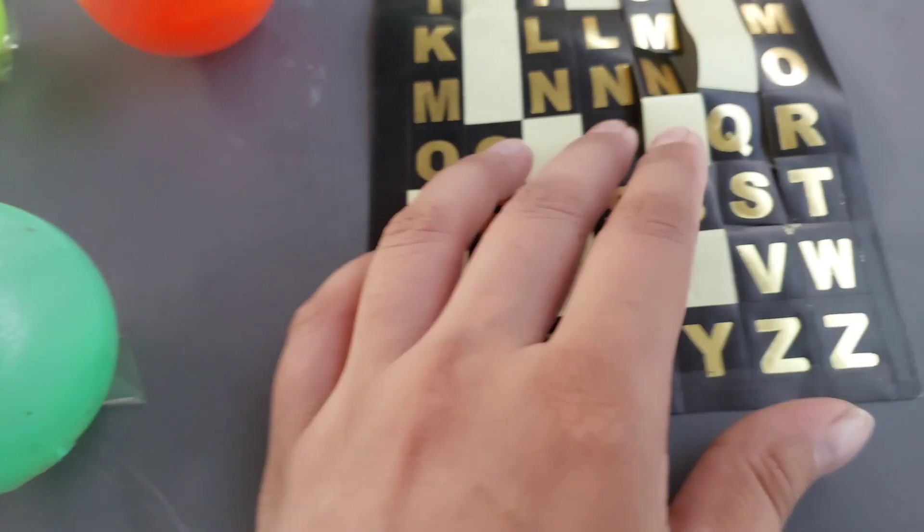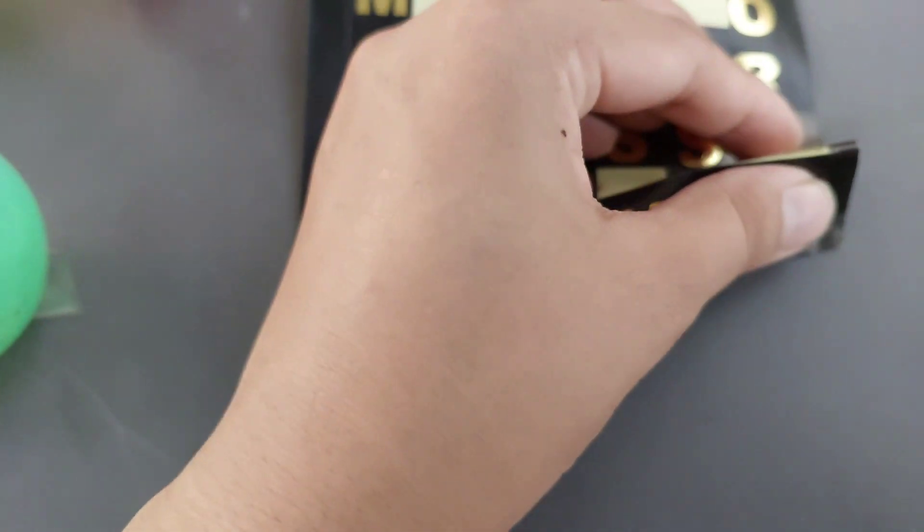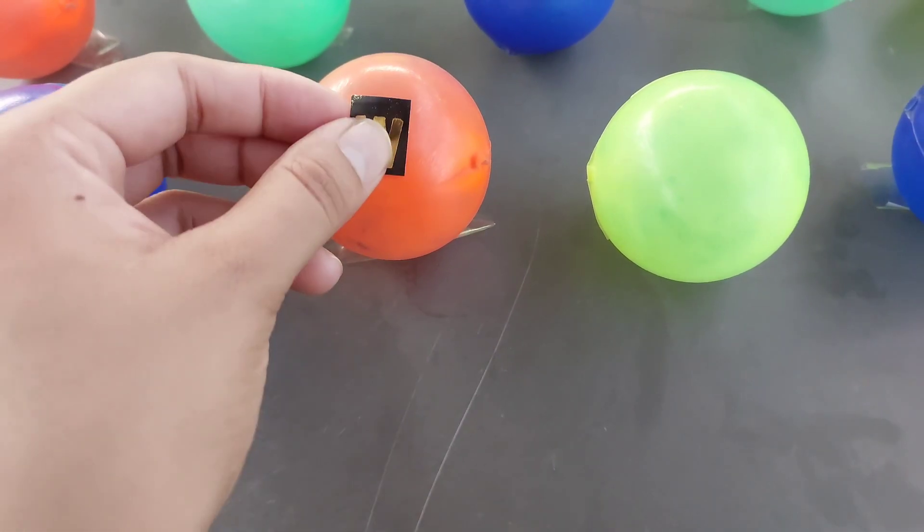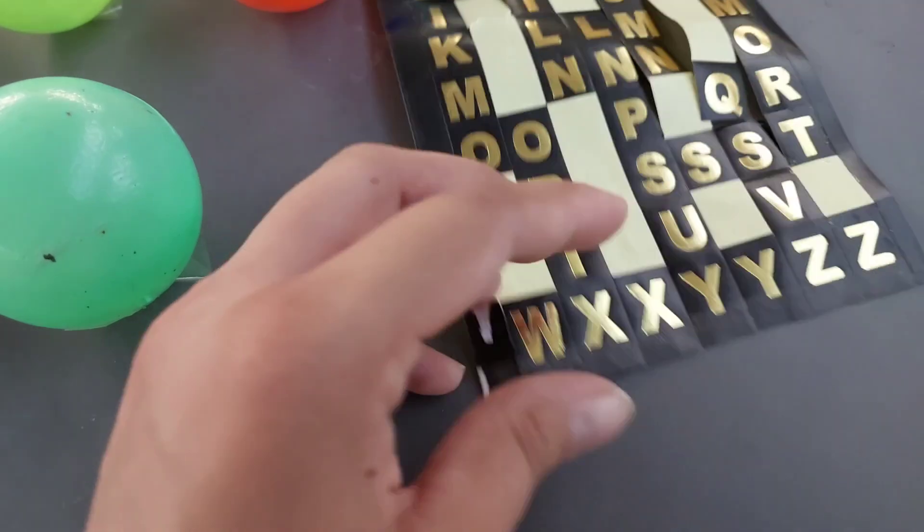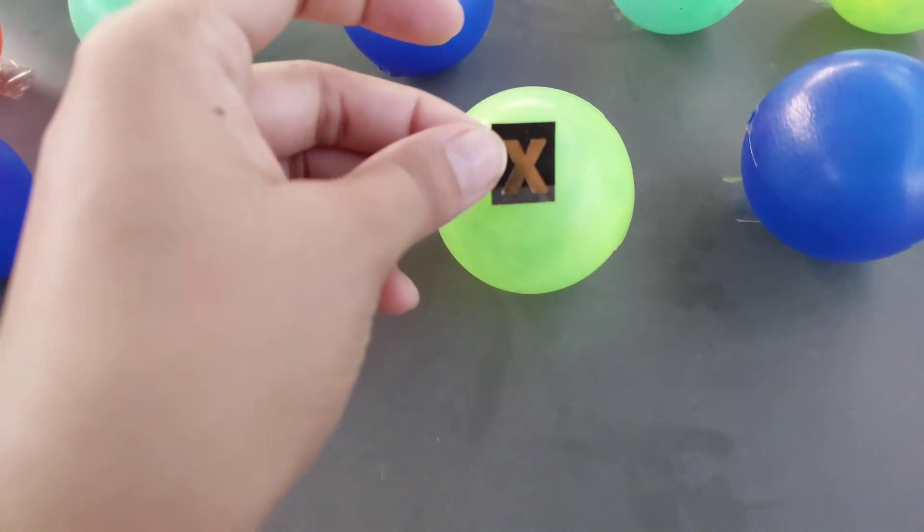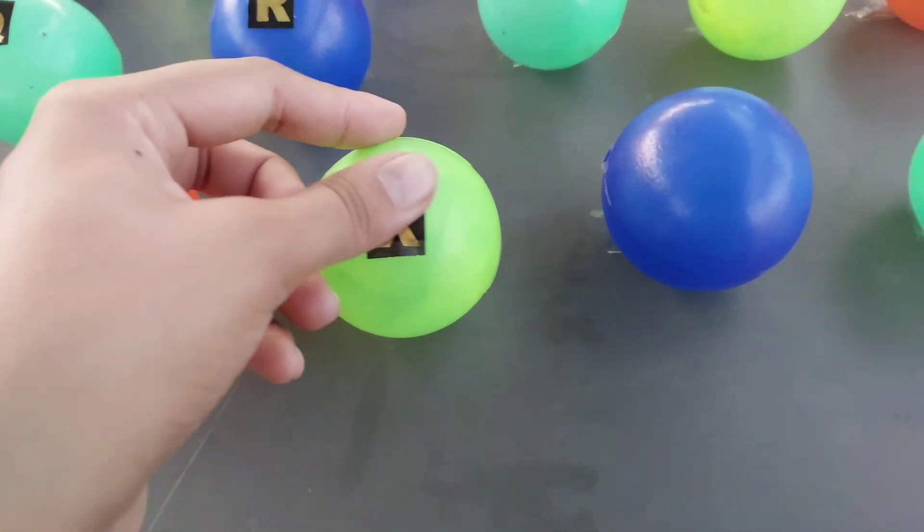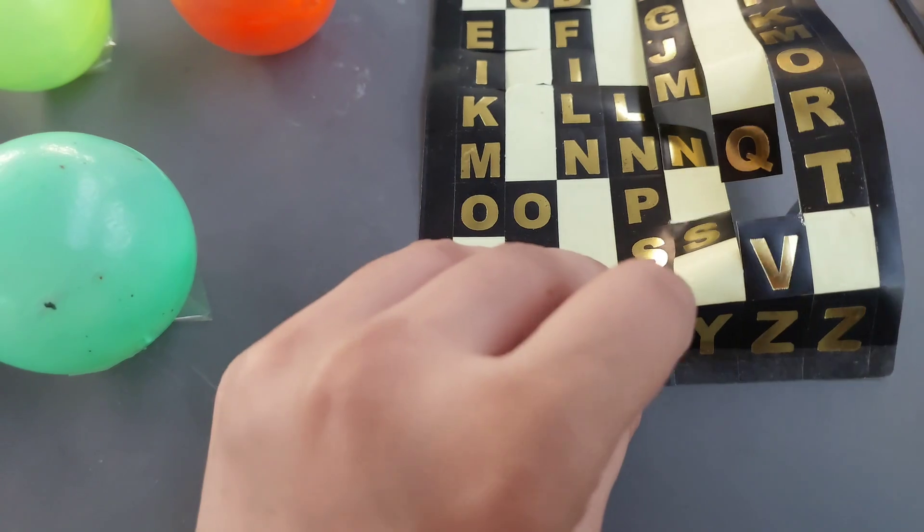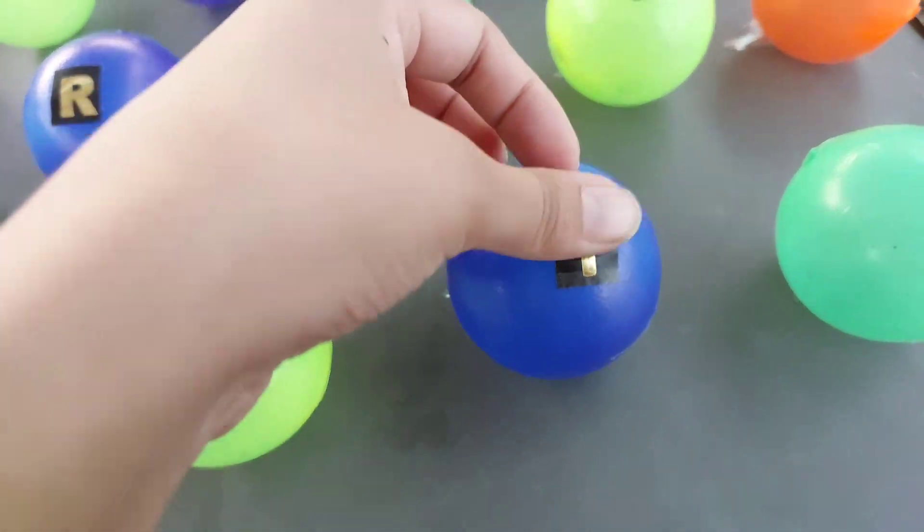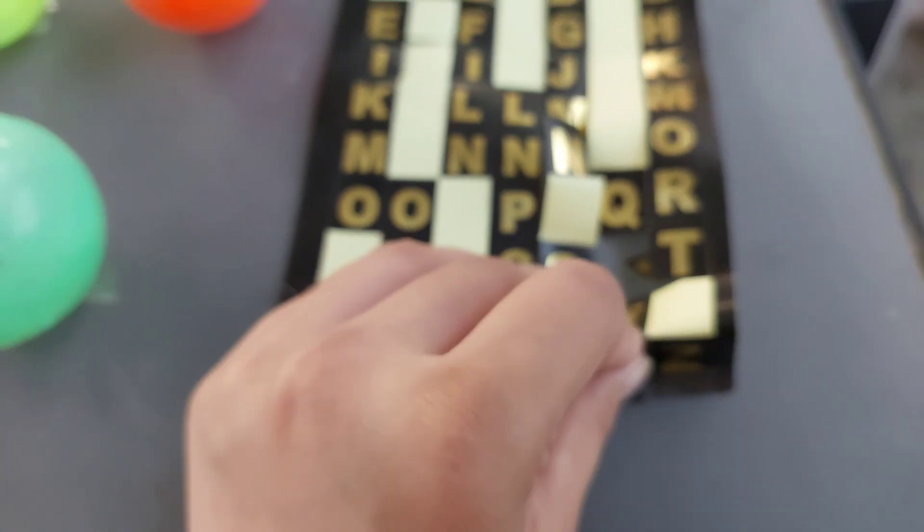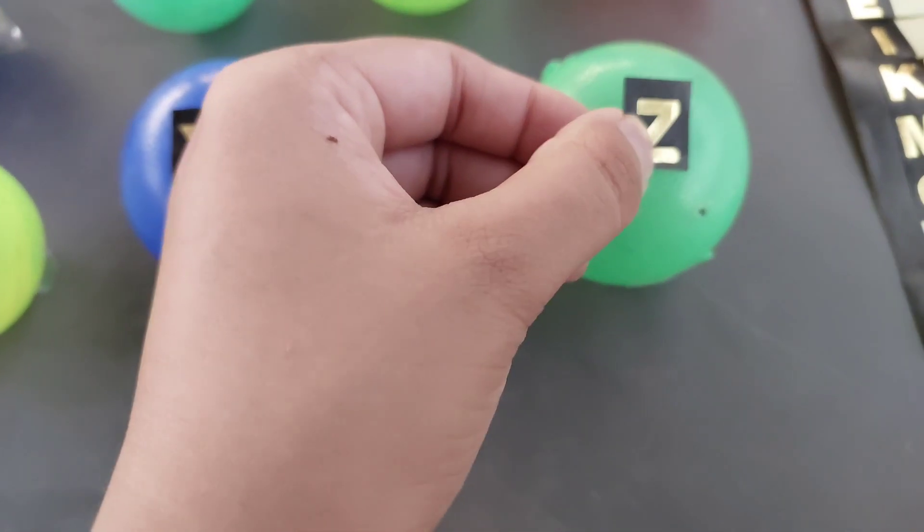The next letter is W. W is for window. This is the letter X. X is for x-ray. Now this is the letter Y. Y is for yellow. Now the last letter is Z. Z is for zebra.